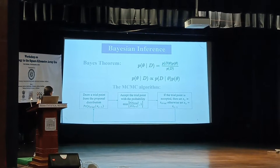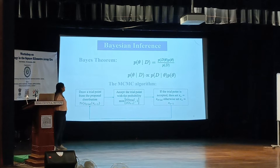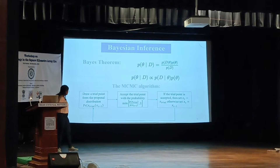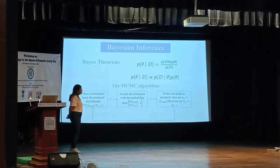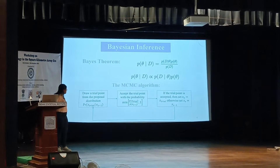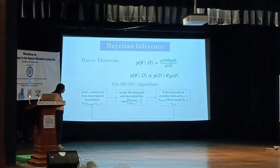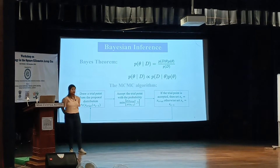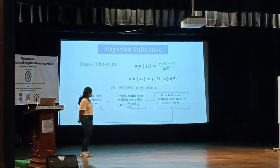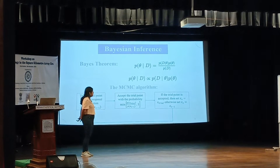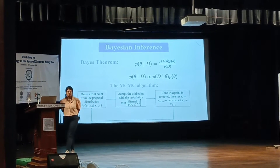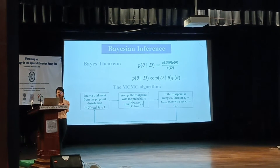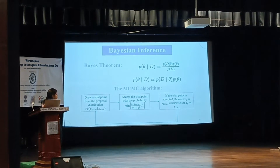Ultimately, the aim was to do Bayesian inference, and this is a simple overview of that process. This is a standard step in an MCMC algorithm. For each step, a random trial point is drawn, and then the algorithm checks whether the point needs to be accepted or not. If it is not accepted, the next point is set as the previous point and we go again. Otherwise, the next point is set as the trial point and it goes on.